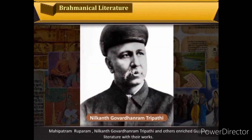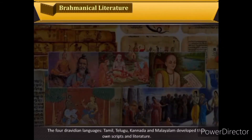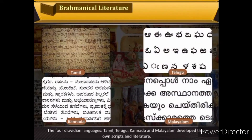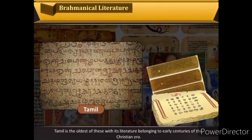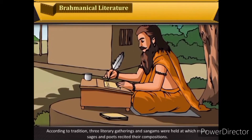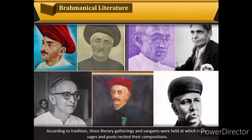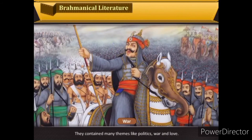The four Dravidian languages — Tamil, Telugu, Kannada and Malayalam — developed their own scripts and literature. Tamil is the oldest of these, with its literature belonging to the early centuries of the Christian era. According to tradition, three literary gatherings called Sangams were held at which many sages and poets recited their compositions. They contained many themes like politics, war and love.